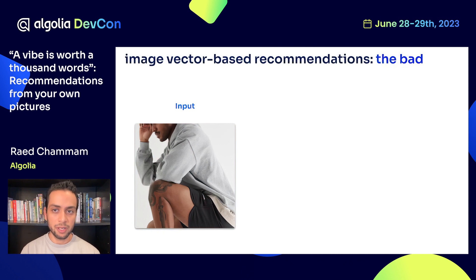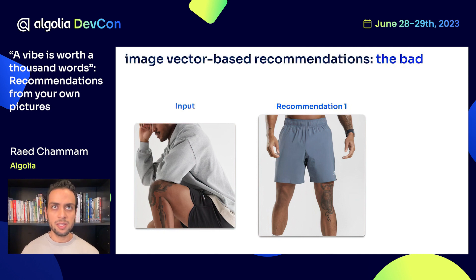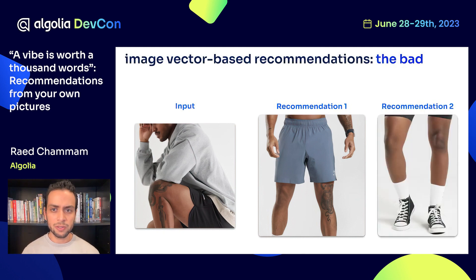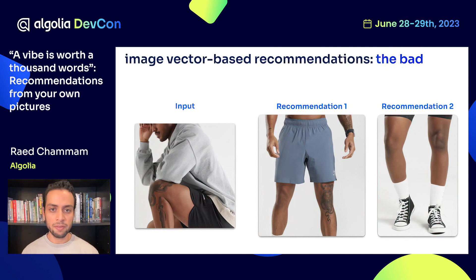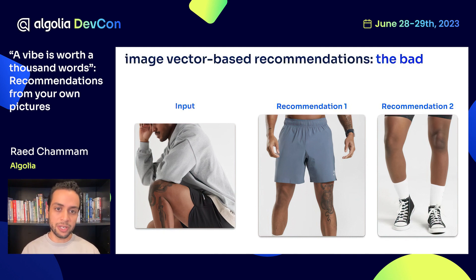This is all great, but it's not perfect, and image-based recommendations show certain limitations. For example, starting with an input of a relaxed gym outfit with a cozy hoodie and black shorts, we can see that the recommendations are not very relevant. Visually the system thinks these are great matches, but it could have caught on to the model's tattoo or the fact that all pictures have limbs in them. So even though they are great visual matches, a bad metadata match isn't great for relevant recommendations — the model misses the point.